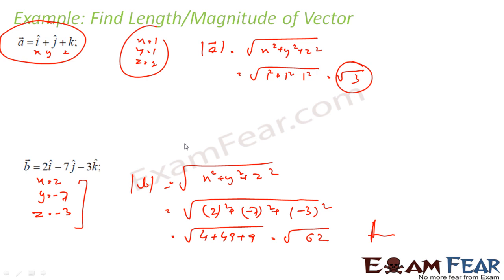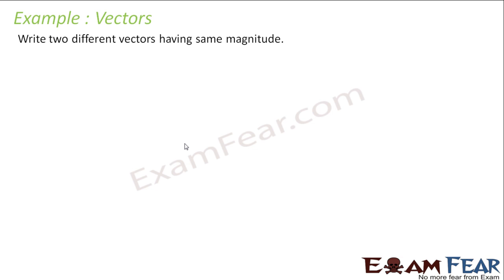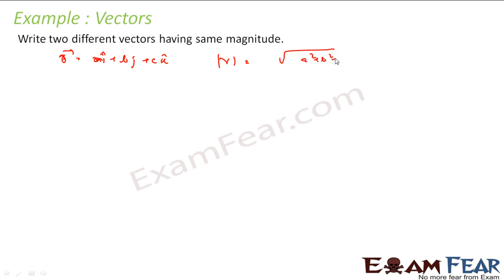Finding the magnitude is very simple if the vector is in the form xi + yj + zk — the magnitude is root of x squared plus y squared plus z squared. For example, if you write ai + bj + ck and then flip it to bi + aj + ck, both are different vectors but they have the same magnitude, since root of a squared plus b squared plus c squared equals root of b squared plus a squared plus c squared.